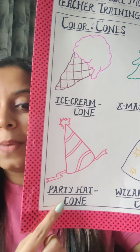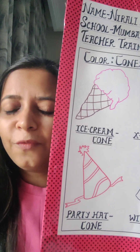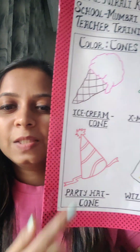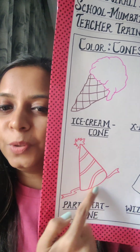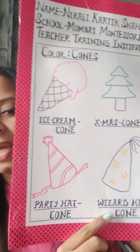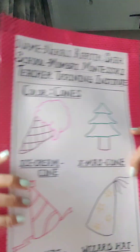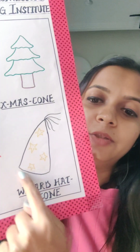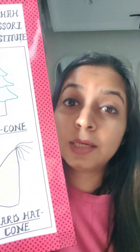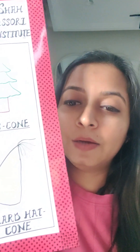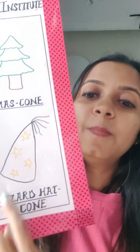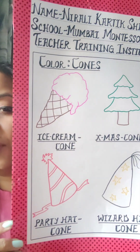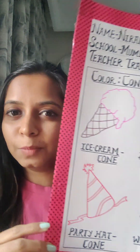Next we have a party hat. You'll love wearing party hats on your birthdays. Let's color in different colors and make this hat more beautiful. The last we have is a wizard hat, which is again cone in shape. The wizard hat is black in color, so we'll color the hat in black and the little stars in yellow.